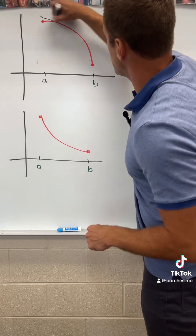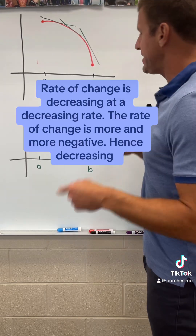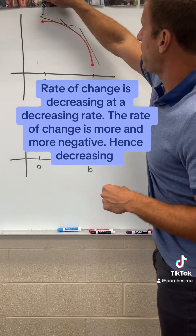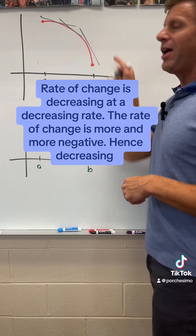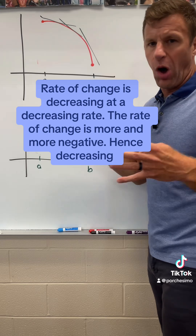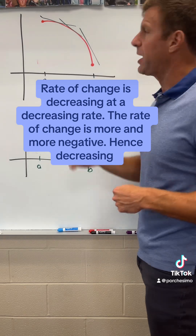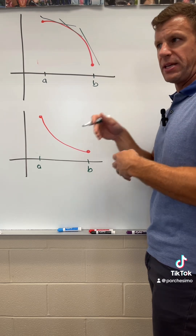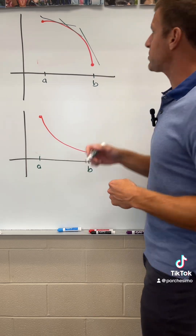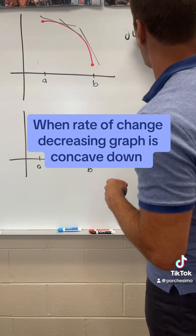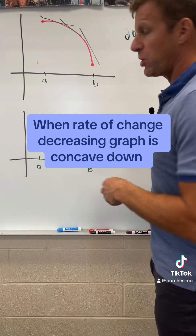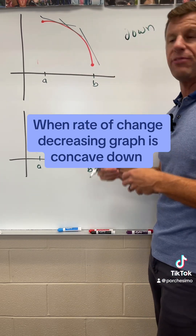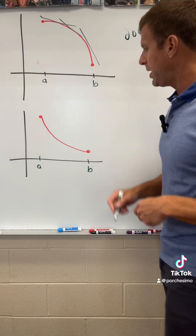Here our rates of change are decreasing at a decreasing rate. What's happening is the rates of change are becoming more and more negative. The rate of change is always negative — that's why it's decreasing — but they're becoming more and more negative, which means you're becoming smaller and smaller. That's why this is, again, concave down. When your rate of change is decreasing — in this case becoming more and more negative — you're concave down.